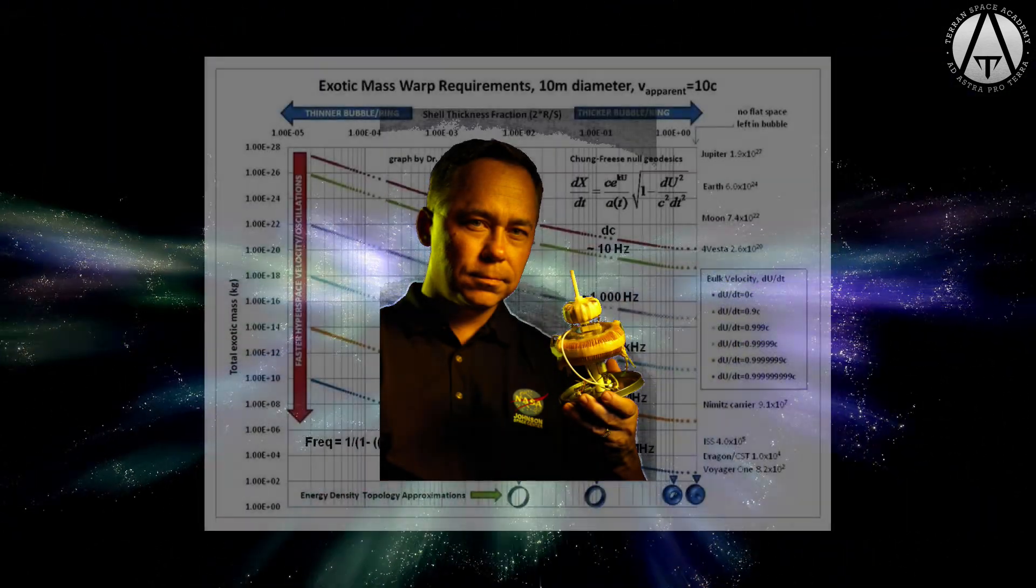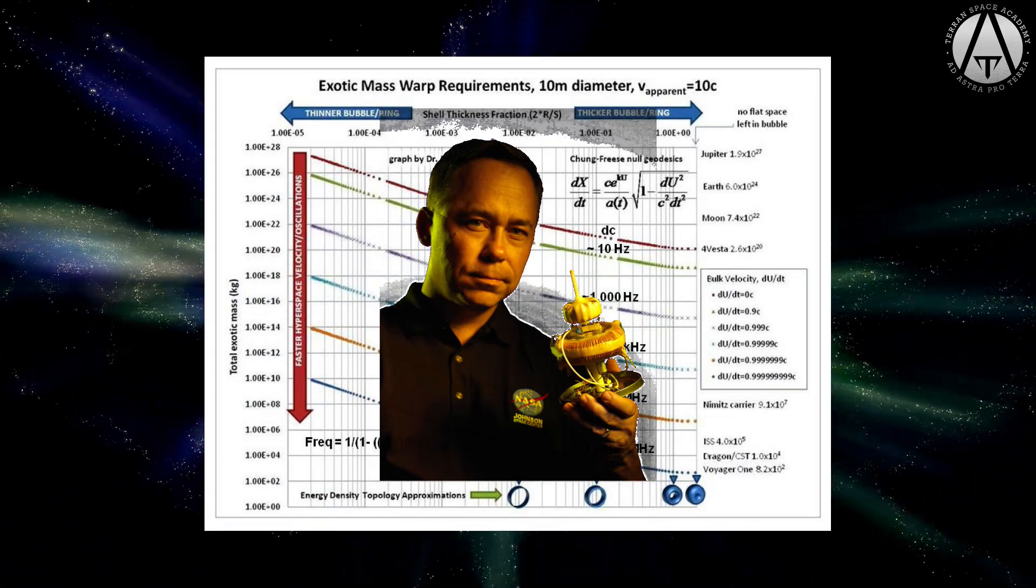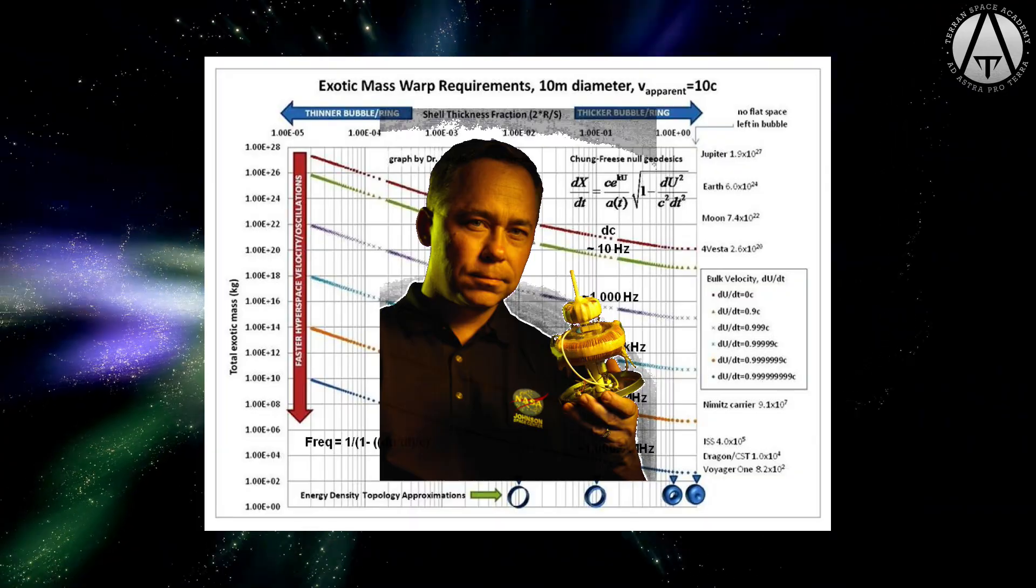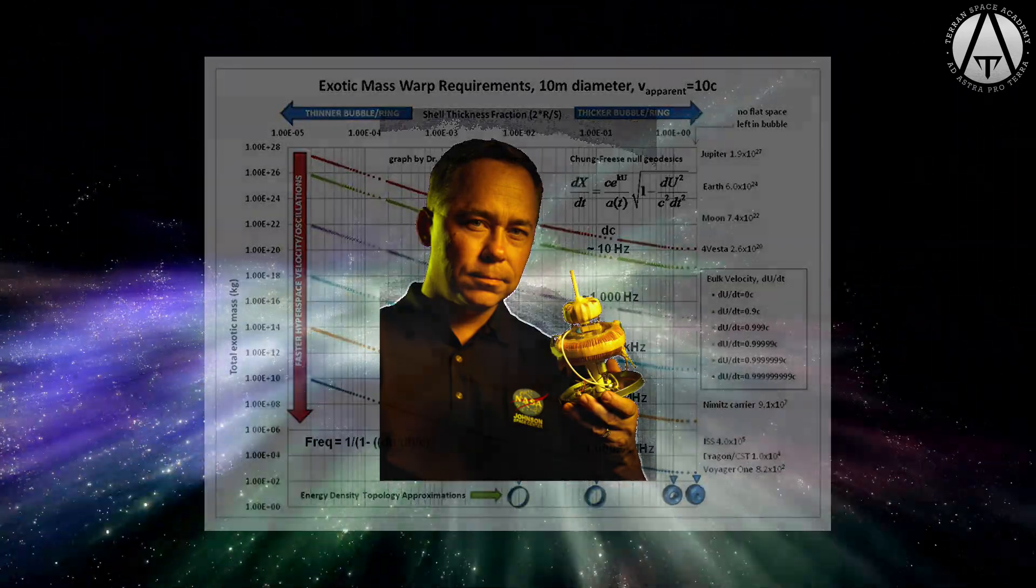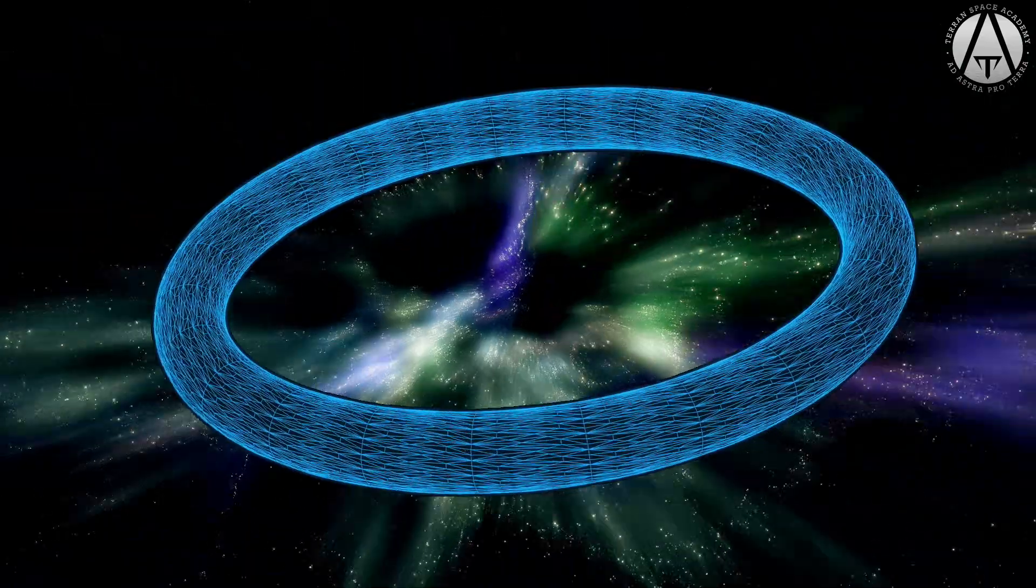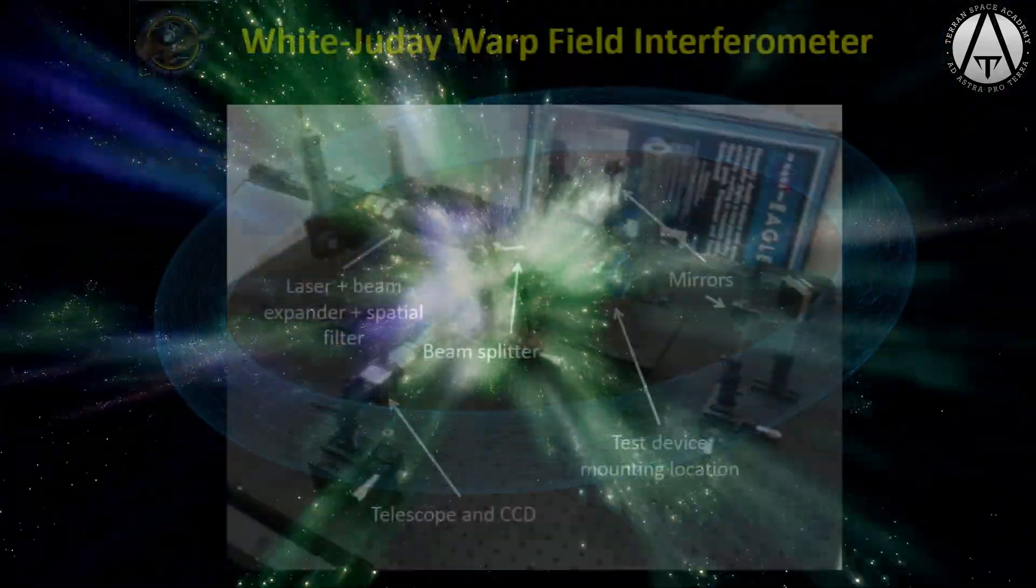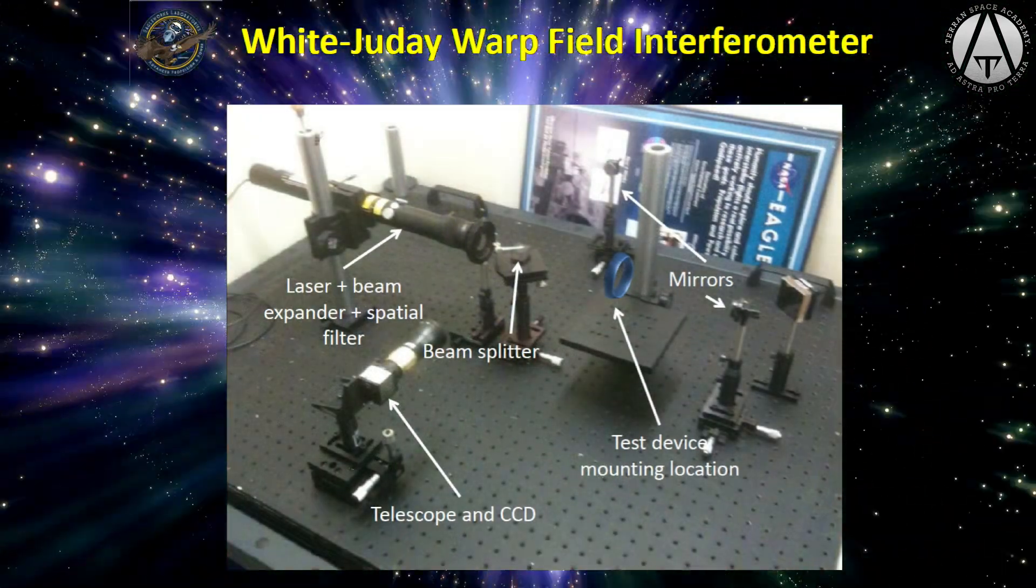He described this refinement in a paper titled Warp Field Mechanics 101. Dr. White showed that if the warp bubble was shaped like a torus or donut, it would be much more energy efficient and make the concept more technologically feasible.